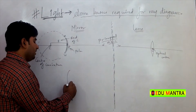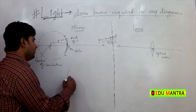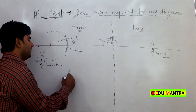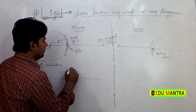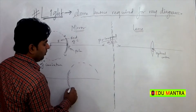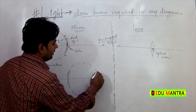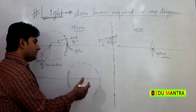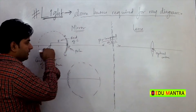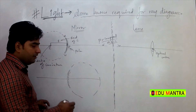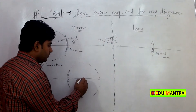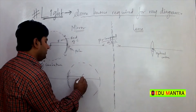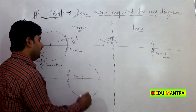In case of, agar ham yaha pe convex mirror le, uska center aur radius dono ki kaha pe hota hai. So jo hum diagram mein hai, uski sab se right mein hota hai, iska is taraf hai. So iska center of curvature kuch yaha pe hota hai, radius bhi kuch is taraf hi hota hai.